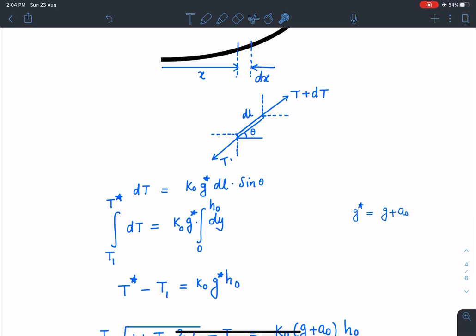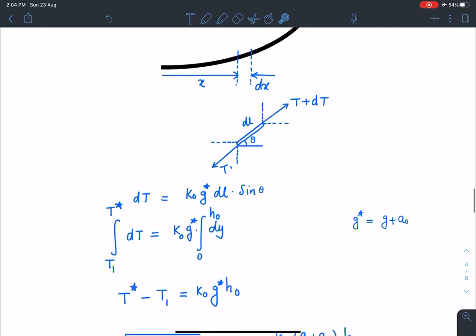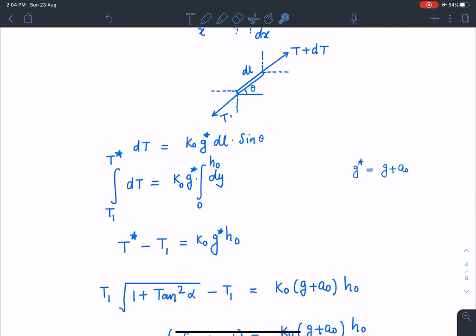So here tension is T1 and it goes to T star I'm calling, which is T1 times root of 1 plus tan square alpha. So here I can write T star minus T1 that is the integral dT and limit of y goes from 0 to h0. So k0 g star h0.